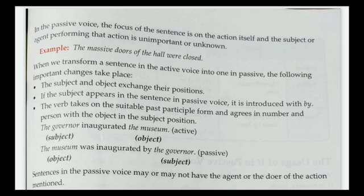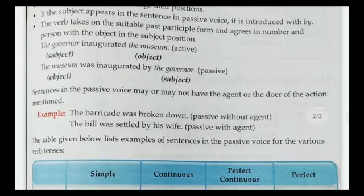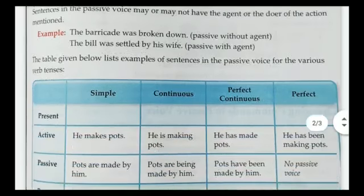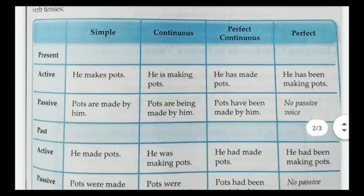Sentences in the passive voice may or may not have the agent or doer of the action mentioned. For example, 'The museum was inaugurated' is also correct without adding 'by the governor.' Similarly, 'The barricade was broken down' is passive voice and the agent is not mentioned. For further explanation, you need to understand and memorize the tense table.